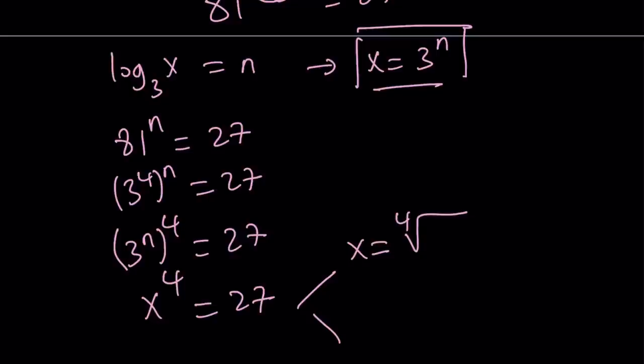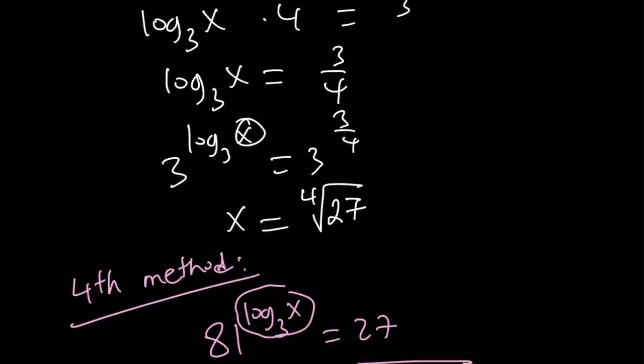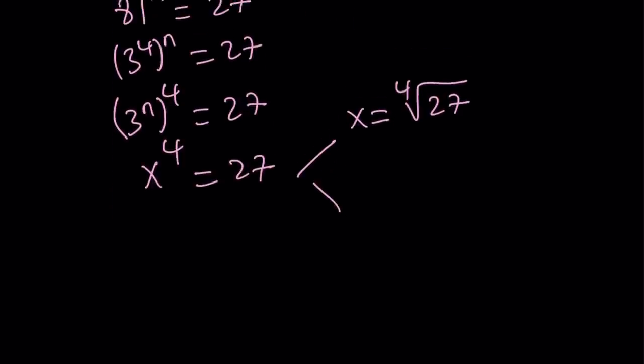And notice that in this case, we get the result somewhat more directly. Because we don't even have to deal with like 3 to the power 3 fourths, because we did not convert the 27. We only converted the 81. And the other solution is obviously negative, but this is not accepted.